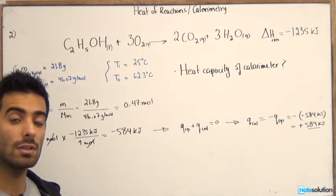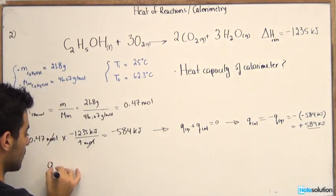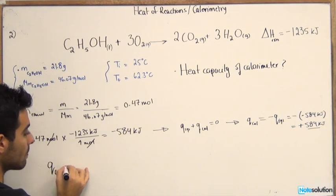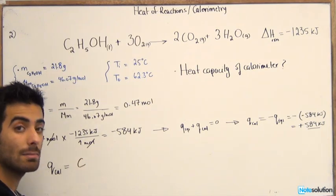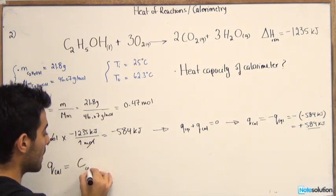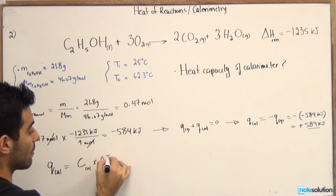Now in order to continue solving this problem we need to know what Q cal represents. Q calorimeter represents the specific heat, which is represented by a big C of the calorimeter, multiplied by the temperature difference.